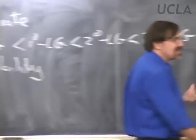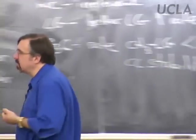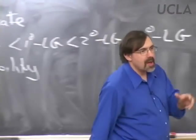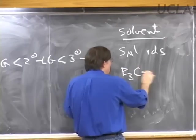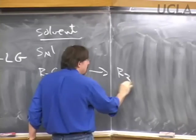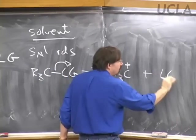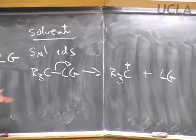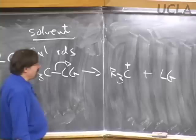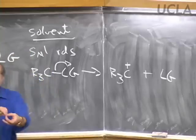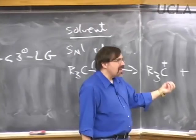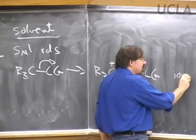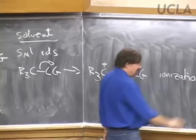In an SN1 reaction, let's think about the rate-determining step: the ionization of the carbon-leaving group bond to make a carbocation plus the leaving group. What's happening is a covalent bond is breaking — something which used to be covalent is now becoming ions. That is ionization. If you take sodium chloride and dissolve it in water, it's not ionizing — it's already ionized; that's dissociation. Taking something covalent and breaking the bond apart is ionization.